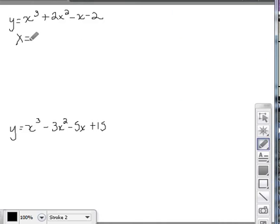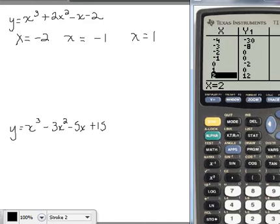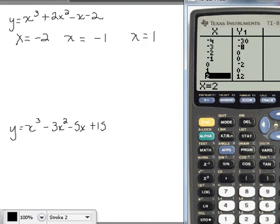We have roots of negative 2, negative 1, and 1. So again, if you see it on the screen there, we had those roots where we had y values of 0, we're at negative 2, negative 1, and 1.